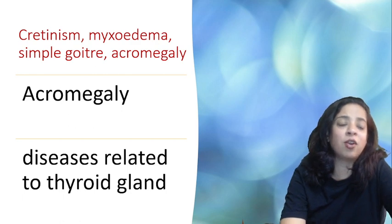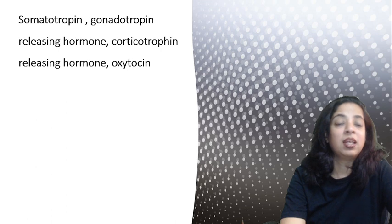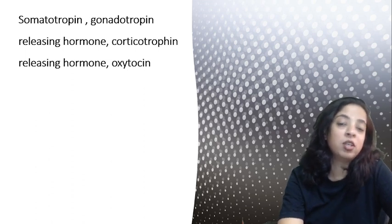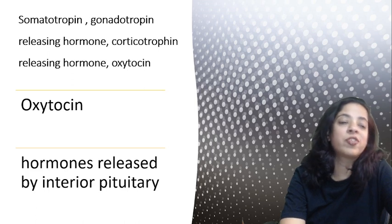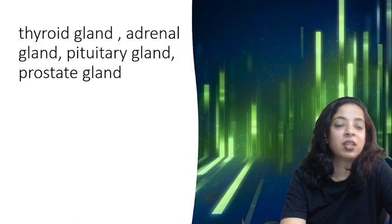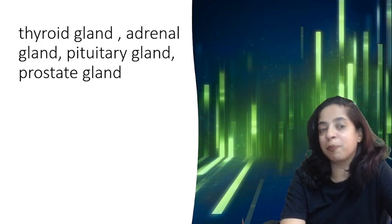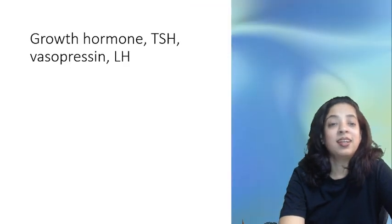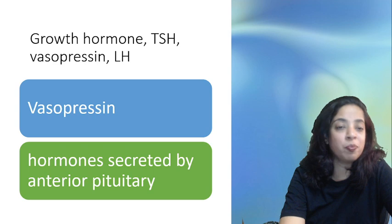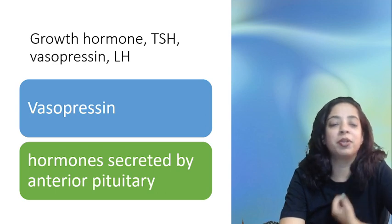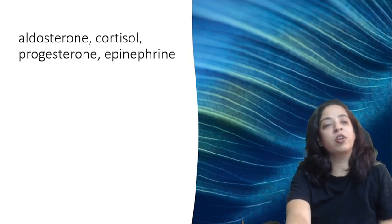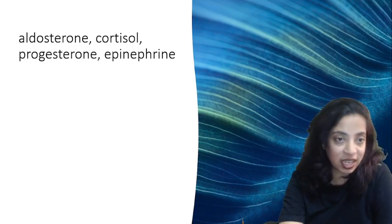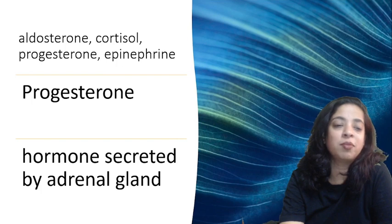Third set: somatotropin, gonadotropin-releasing hormone, corticotropin-releasing hormone, and oxytocin. The odd one out is oxytocin; the others are hormones released by the anterior pituitary. Fourth set: thyroid gland, adrenal gland, pituitary gland, and prostate gland. The odd one out is prostate gland; the others are all endocrine glands. Fifth set: growth hormone, TSH, vasopressin, LH. The odd one out is vasopressin; the others are hormones secreted by the anterior pituitary. Sixth set: aldosterone, cortisol, progesterone, epinephrine. The odd one out is progesterone; the others are hormones secreted by the adrenal gland.